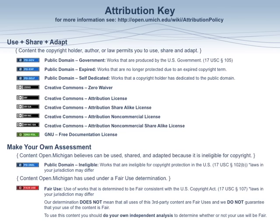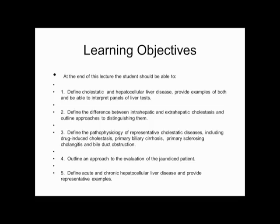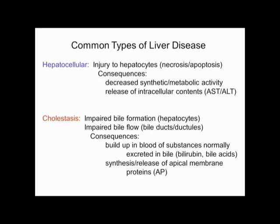Today we're going to talk about the ones that primarily start with or involve problems in bile formation and bile flow, which are the cholestatic diseases. The cholestatic diseases are ones where either bile isn't properly formed — that's the primary problem — or more commonly, something blocking or impairing bile flow.